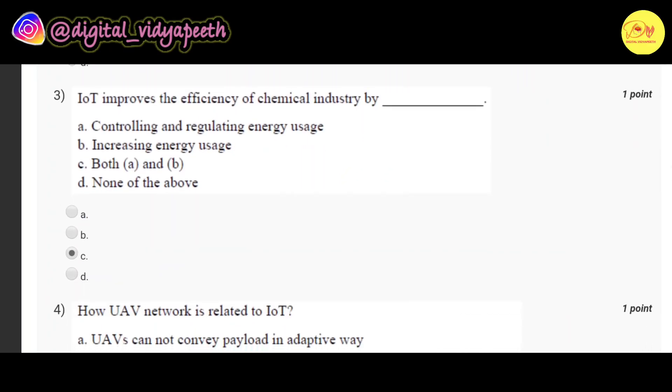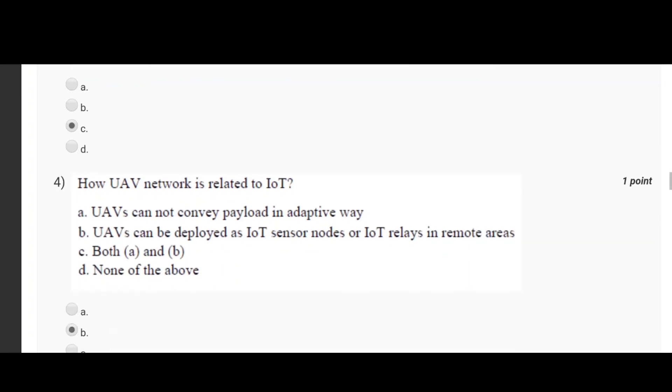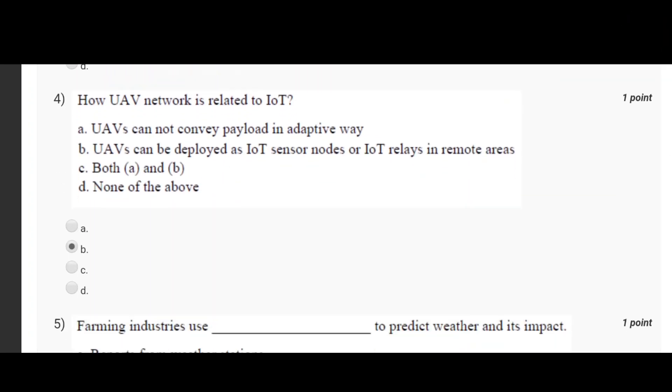Our third question is IoT improves the efficiency of chemical industry by. Correct option is C, both A and B, that is controlling and regulating energy uses and increasing energy uses. Our fourth question is how UAV network is related to IoT? Correct option is B, UAVs can be deployed as IoT sensor nodes or IoT relays in remote areas.